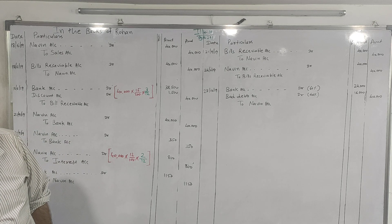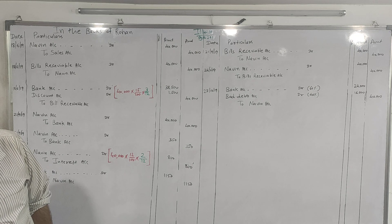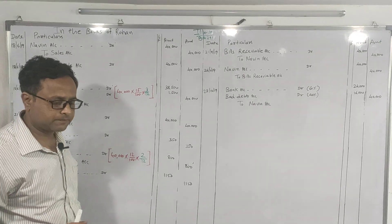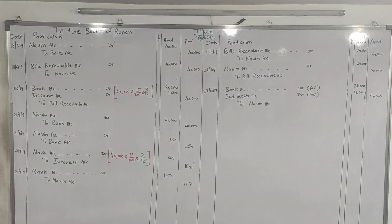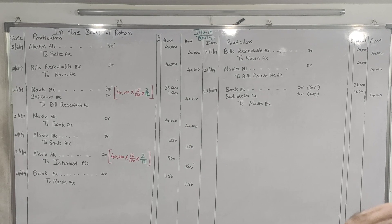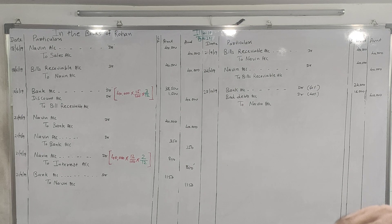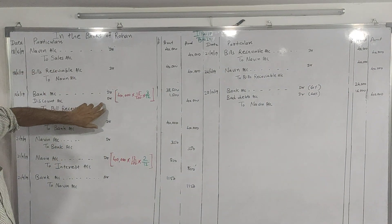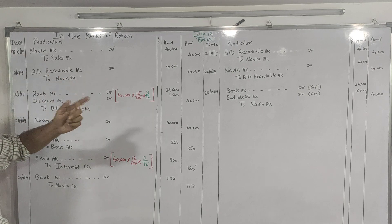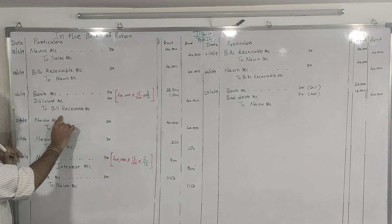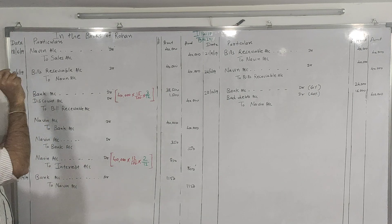On 19th June 2019, Rohan discounted the bill with the bank at 15% per annum — so on the date of the bill, Rohan discounted the bill with the bank. This is Case 2: Bill Discounting. The entry for bill discounting is: Bank Account Dr., Discount Account Dr. to Bills Receivable.